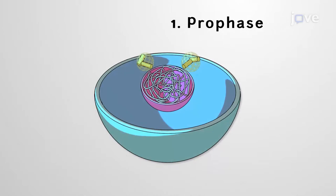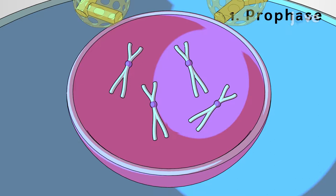First, during prophase in humans, nucleic chromatin condenses into X-shaped chromosomes composed of sister chromatid pairs attached at centromere junctions.